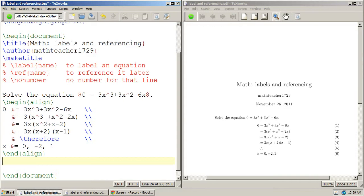Let's go back to the example that we had with the align environment. We had to solve the equation 3x to the third plus 3x squared minus 6x, and then we went and we did a bunch of algebraic steps.